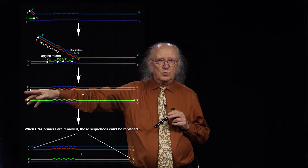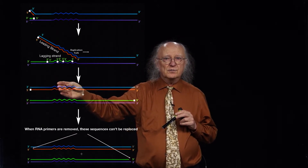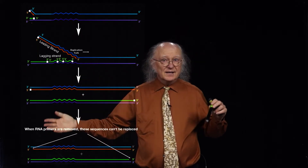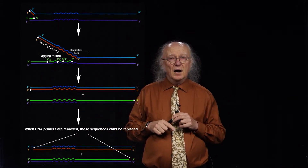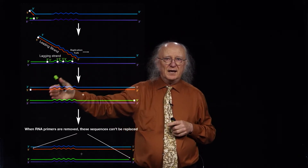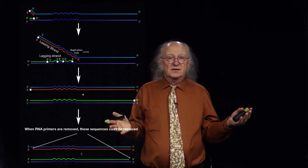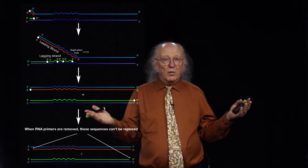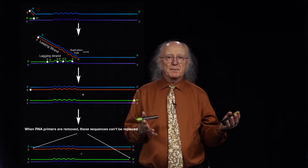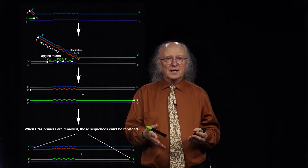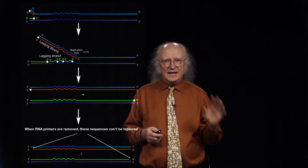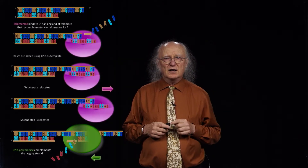A telomere is a fuse that's burning down. Every time the cell divides, that fuse gets shorter and shorter. By the time you run out of fuse and start deleting genes essential for the cell, the bomb goes off and the cell dies. The fuse is giving the cell time to replicate many times without consequences — that's one of the functions of a telomere. The question then is: how does a telomere get made? That's the function of the enzyme called telomerase.